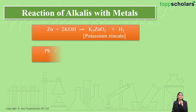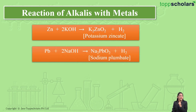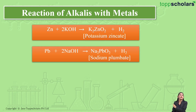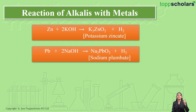Now let's take another metal. Here I have lead which reacts with sodium hydroxide, which is an alkali, resulting in the formation of salt and liberation of hydrogen gas. The salt formed over here is Na₂PbO₂, which is sodium plumbate, also called sodium plumbite.